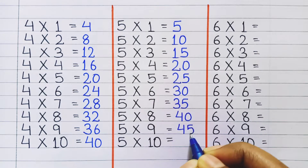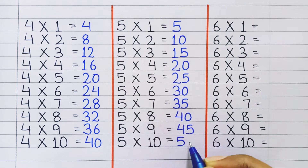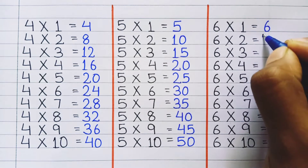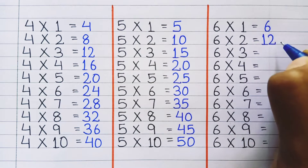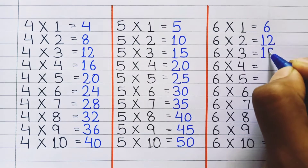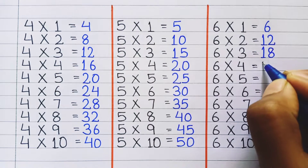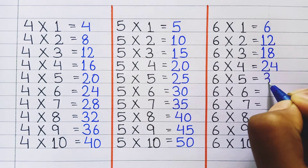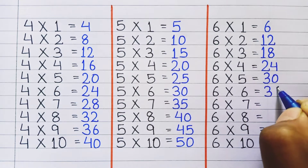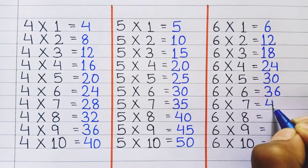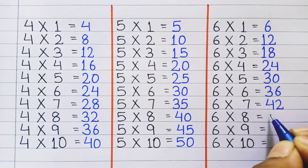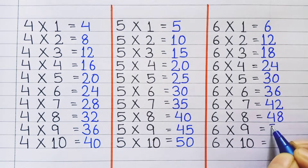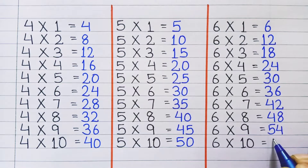5 nine's a 45, 5 ten's a 50. Table of 6: 6 one's a 6, 6 two's a 12, 6 three's a 18, 6 four's a 24, 6 five's a 30, 6 six's a 36, 6 seven's a 42, 6 eight's a 48, 6 nine's a 54, 6 ten's a 60.